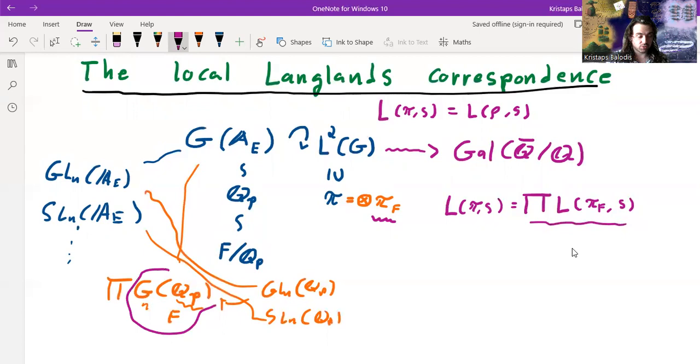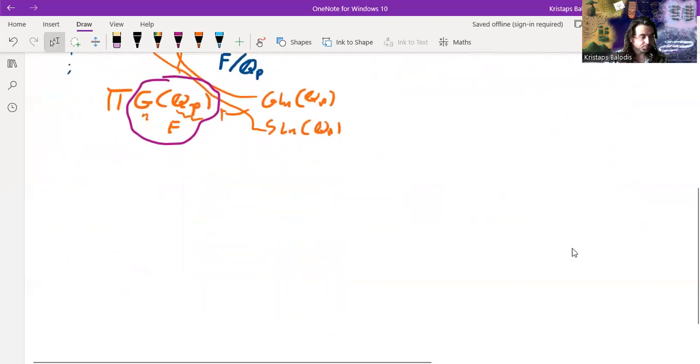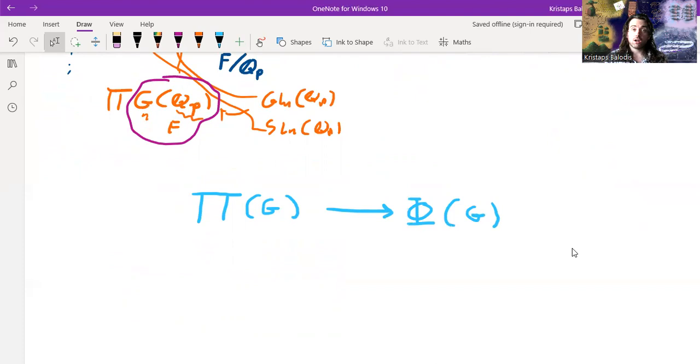Okay so what does the local Langlands correspondence actually say? So it's going to be a correspondence that sort of picks out these individual factors. So without further ado let's talk about that actual correspondence, the local piece of it. So the local Langlands correspondence is about a relationship between two sets. So we have capital pi of G and capital phi of G.